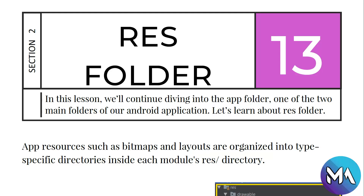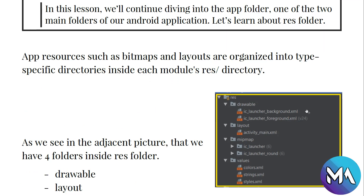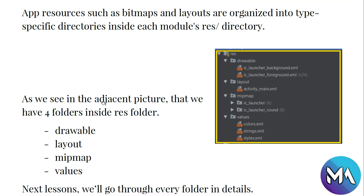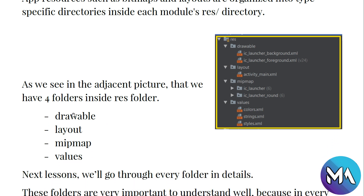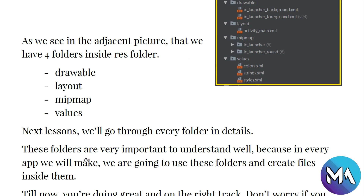App resources such as bitmaps and layouts are organized into type-specific directories inside each module's res directory. The res folder contains directories for drawable, layout, mipmap, and values. As we can see, there are four folders inside the res folder: drawable, layout, mipmap, and values.